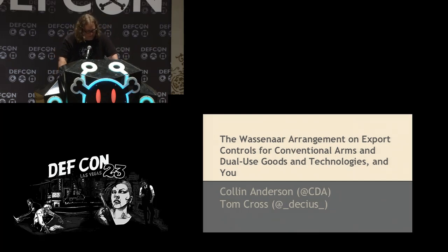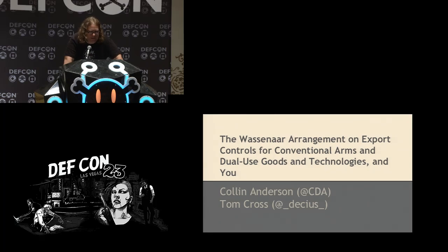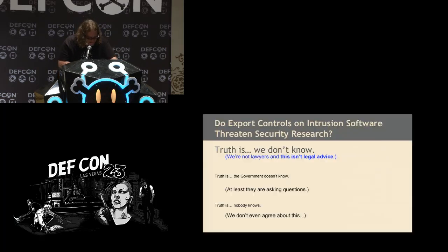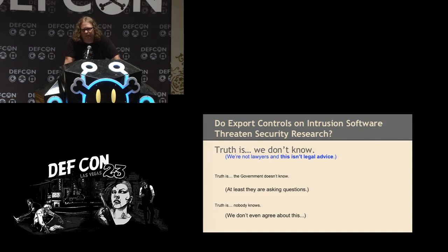We have a somewhat sarcastic title here involving the Wassenaar Arrangement on export controls for conventional arms and dual-use goods and technologies. One of the things we wanted to discuss is: is this or is this not a threat to vulnerability research? The truth is we don't know. Part of the reason is that neither of us is an attorney, so you can't take anything we say as legal advice. The government doesn't know either — they've contradicted themselves on this topic, and we'll show you where. In fact, Colin and I don't even agree about it, so it's a messy topic.